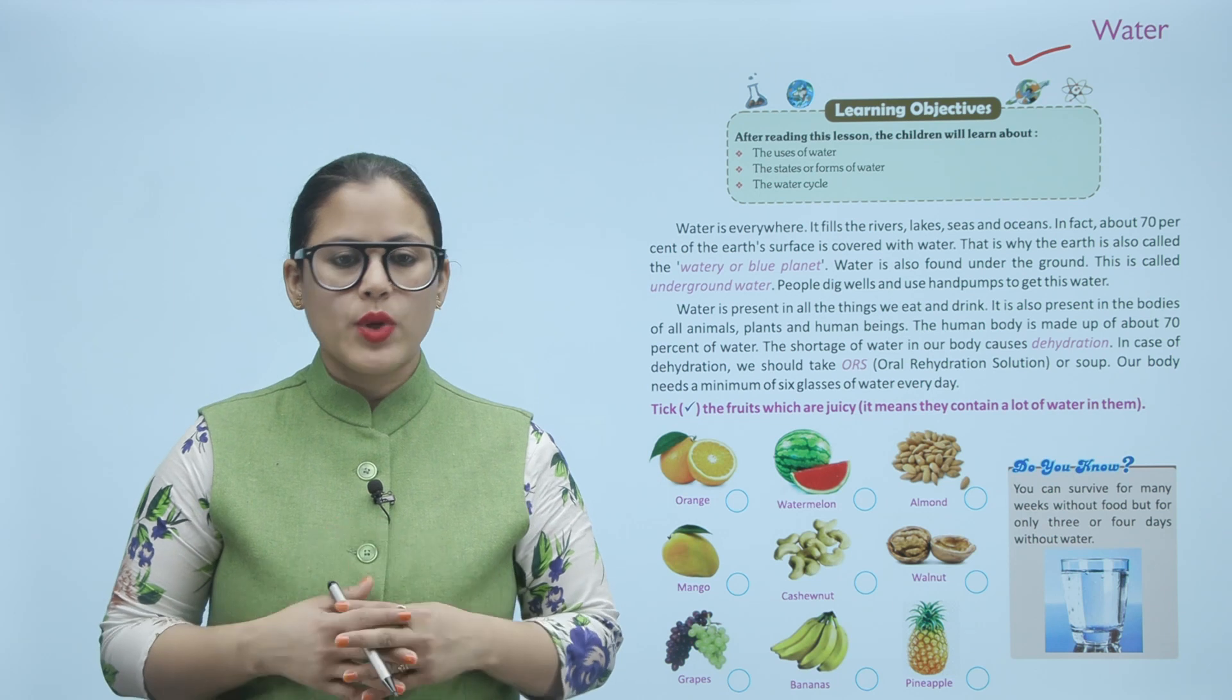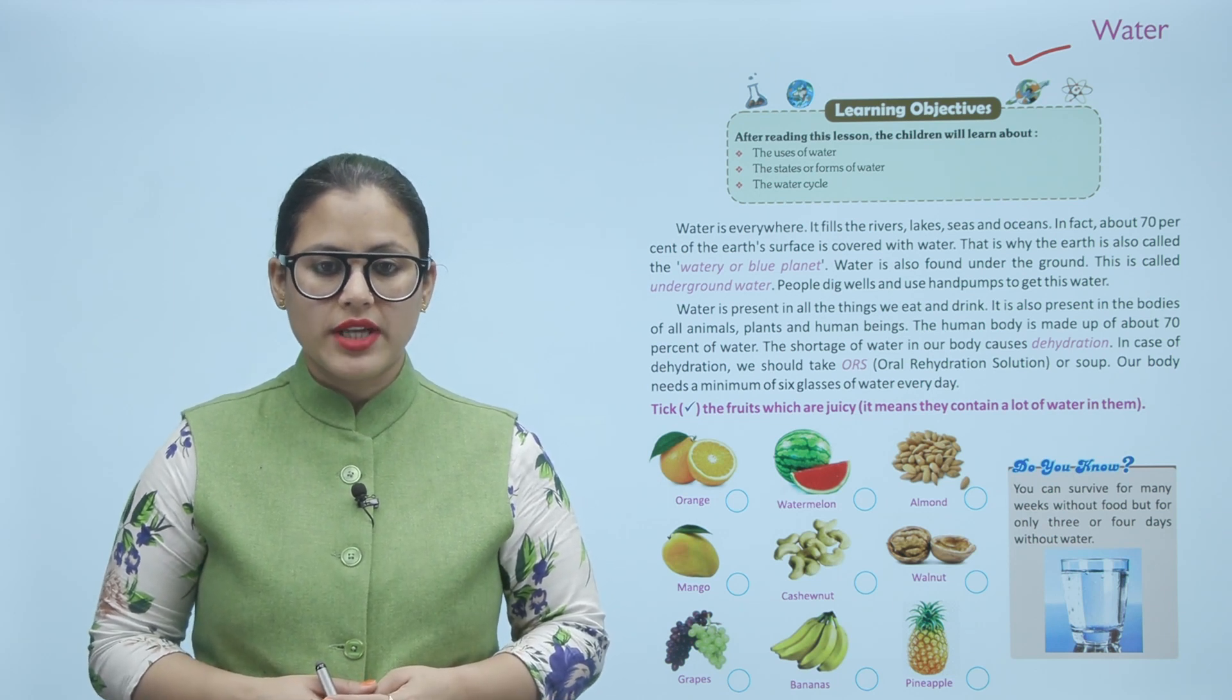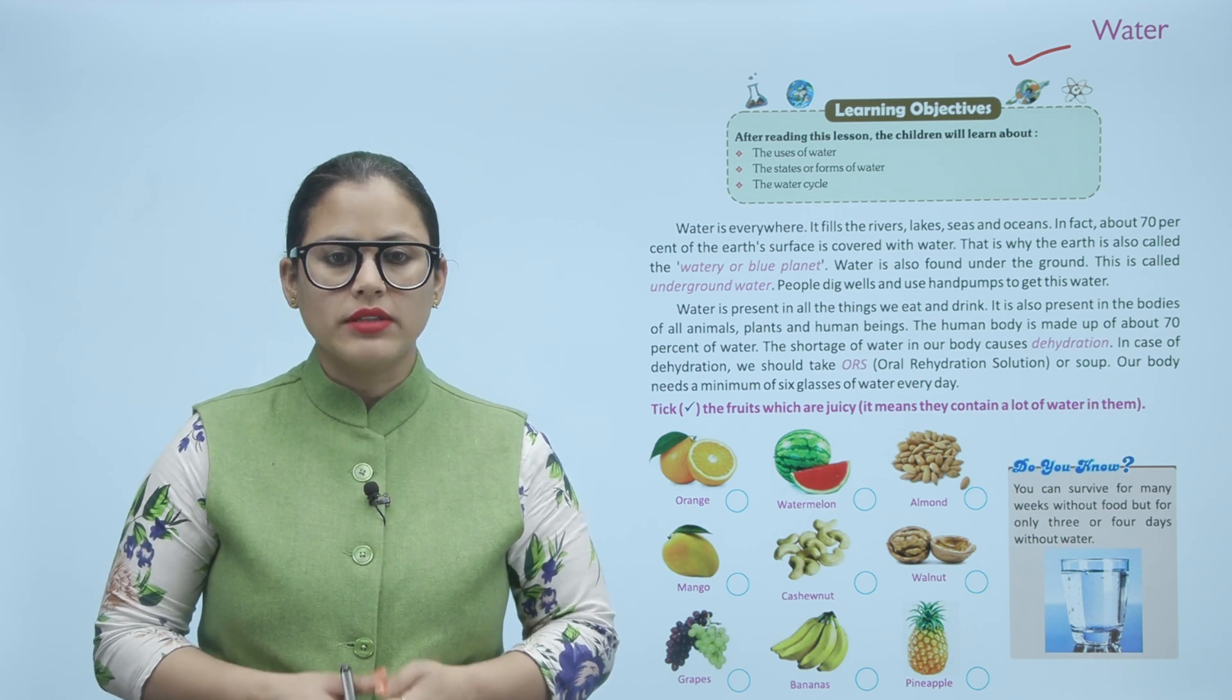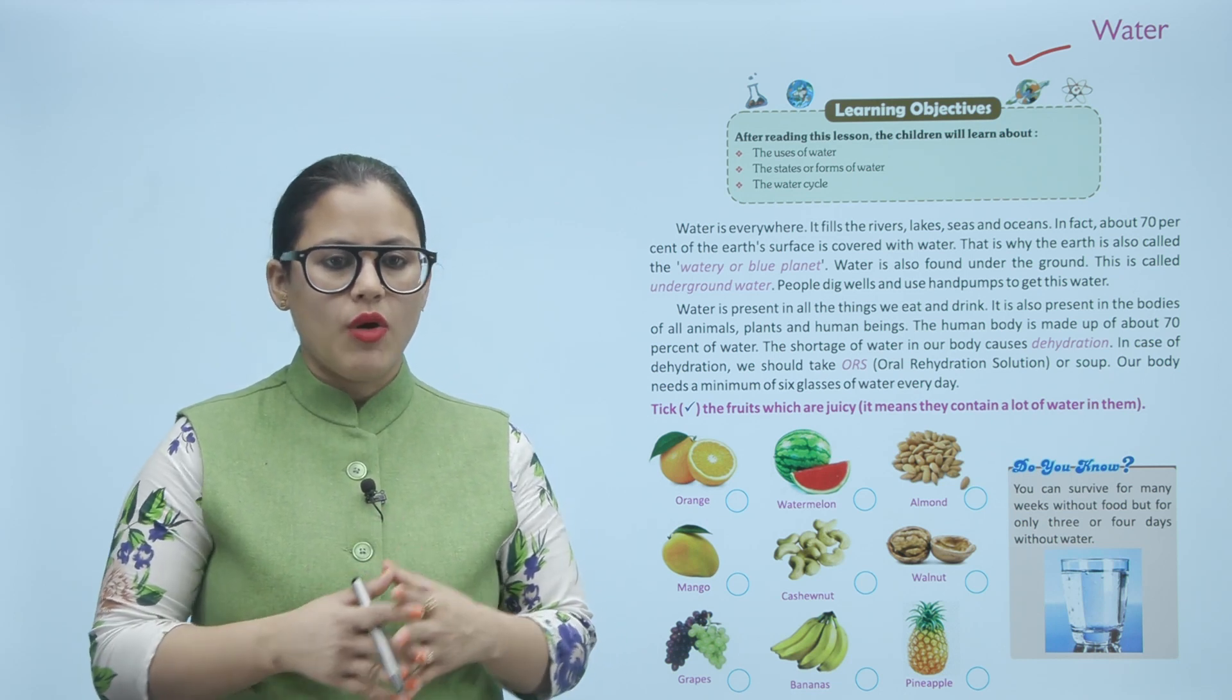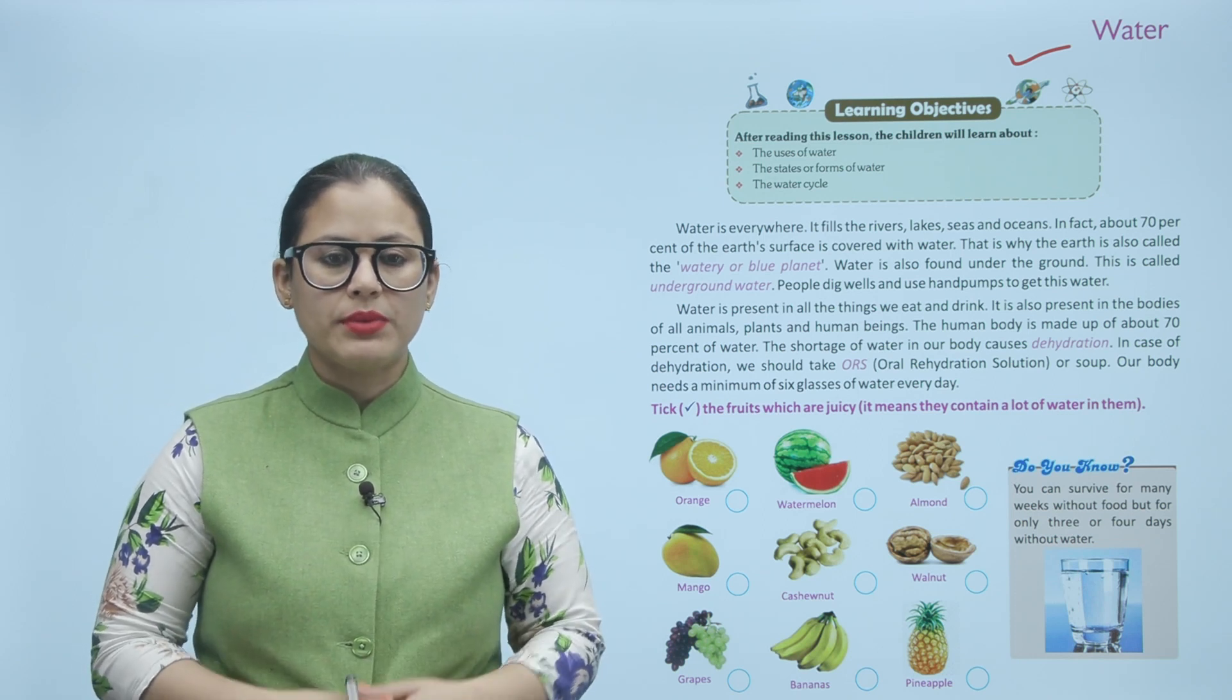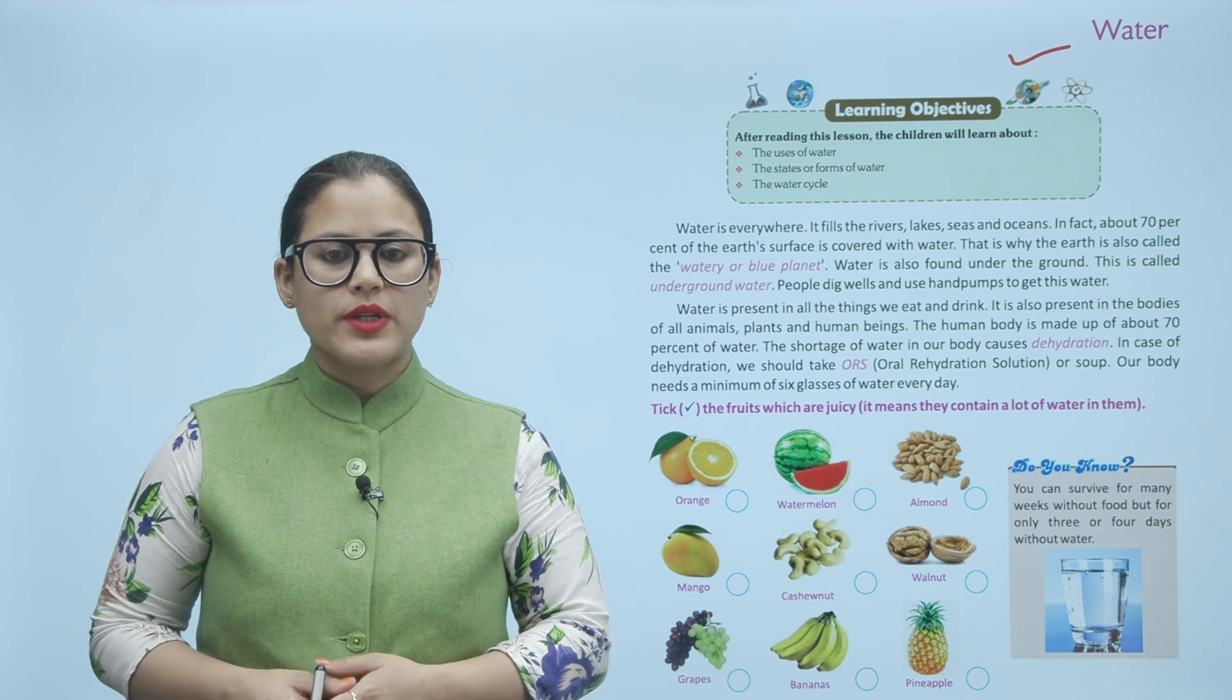Water is everywhere. It fills the rivers, lakes, seas and oceans. In fact, about 70% of the earth's surface is covered with water. That is why the earth is also called the watery or blue planet. Water is also found under the ground. This is called underground water. People dig wells and use hand pumps to get this water.